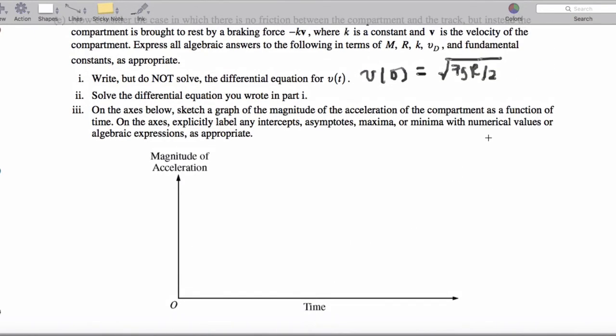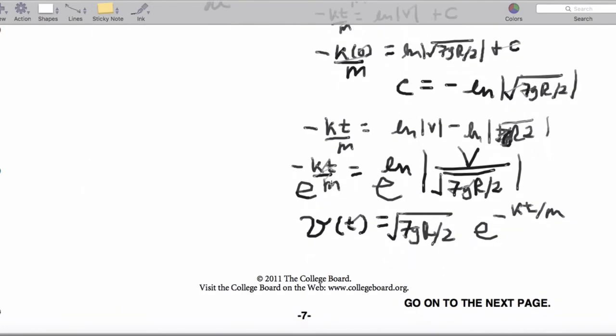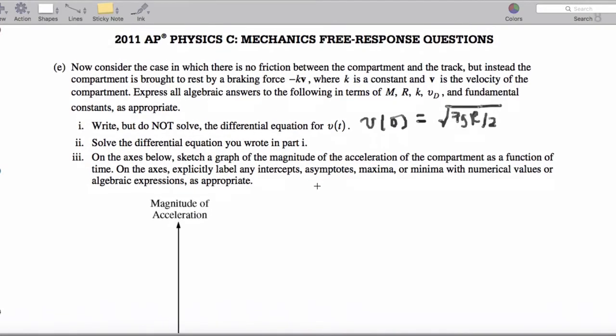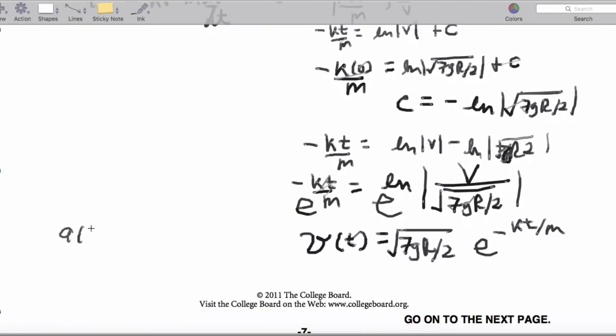And, that means, okay, so that is the differential equation. Now, we're asked to solve for the acceleration as a function of time. So, when we take our derivative, we will end up getting A of T equals negative K over M square root of 7gr over 2. Let me write that again. So, A of T is going to be the derivative, and that's going to be negative K over M times the square root of 7gr over 2 times e to the negative Kt over M.